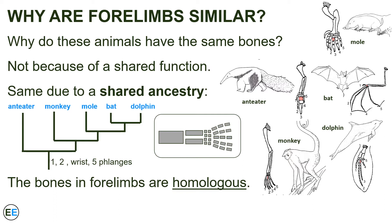So why do all these animals use the same bones? Because if we look at their phylogeny and the fossil record, we can see that their ancestor had forelimbs with the same arrangement of bones, which they have all inherited. The bones in the forelimbs of these animals are similar not because of current function — because those are very different — but because of shared ancestry, and are therefore homologous.